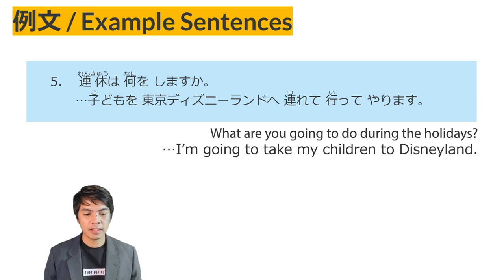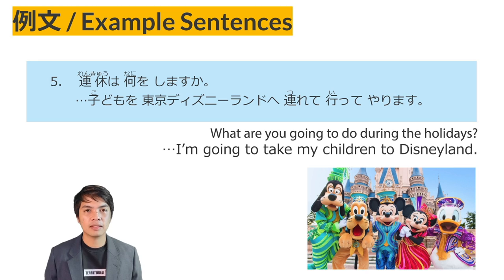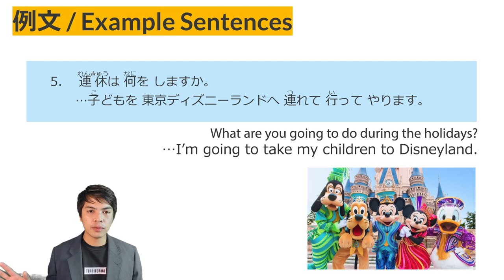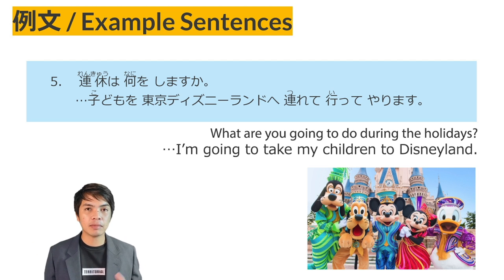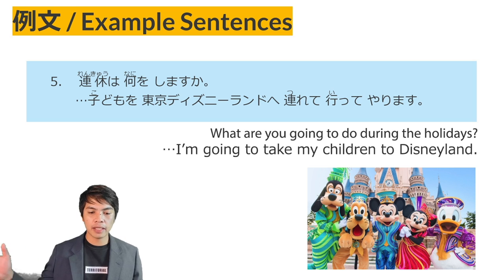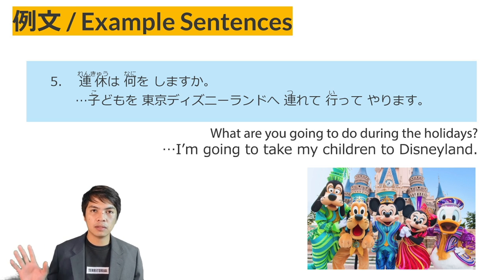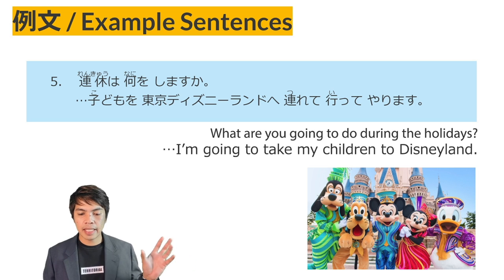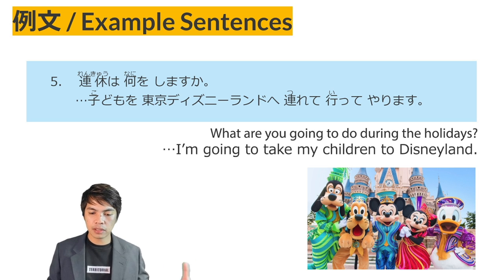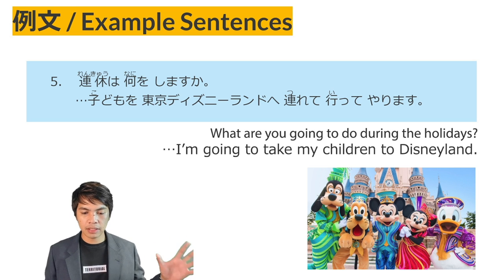Example sentence No. 5: Renkyu wa nani wo shimasu ka? — What are you going to do these coming holidays? Renkyu means consecutive holidays. Kodomo wo Tokyo Disneyland he tsurete itte yarimasu — I will take my children to Tokyo Disneyland. This comes from tsurete itte agimasu, giving a favor to someone. Because the receiver is your child — younger people — you can use yarimasu.